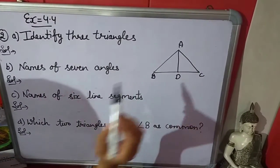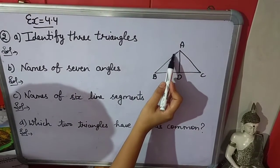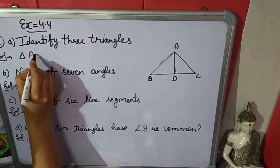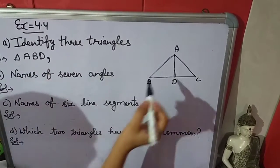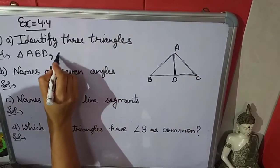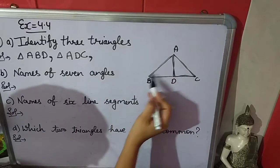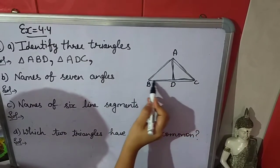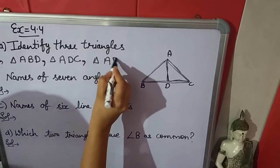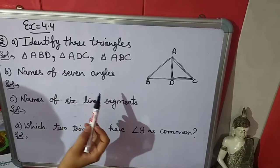Now look at this. You know in a triangle there are three sides. The first triangle is angle A, B, D — so the first triangle will be triangle ABD. The second triangle is angle A, B, C. And the third triangle is A, D, C. The complete third triangle — what is the name of this? — A, B, C. So third triangle is triangle ABC.